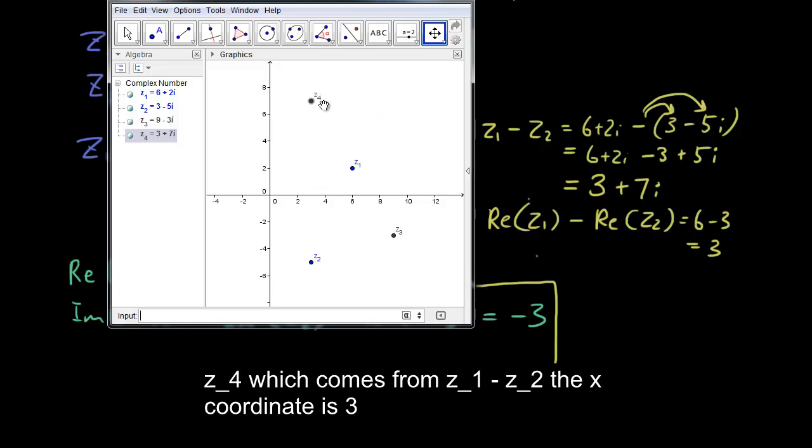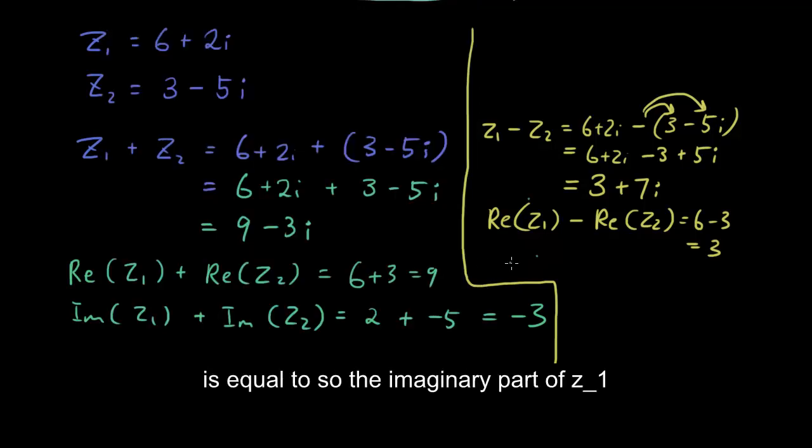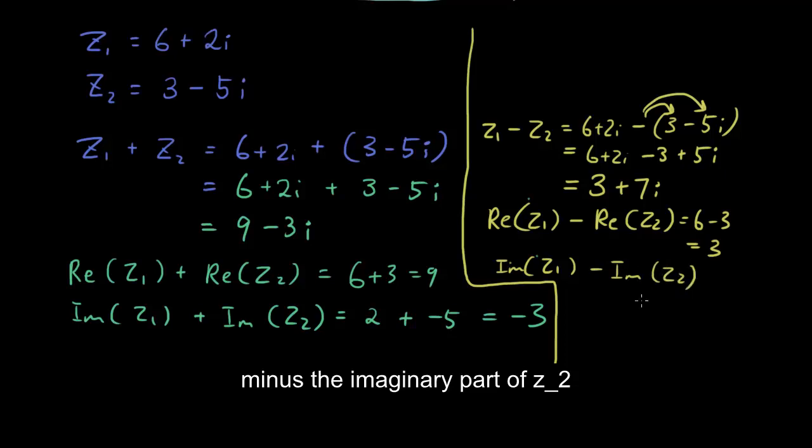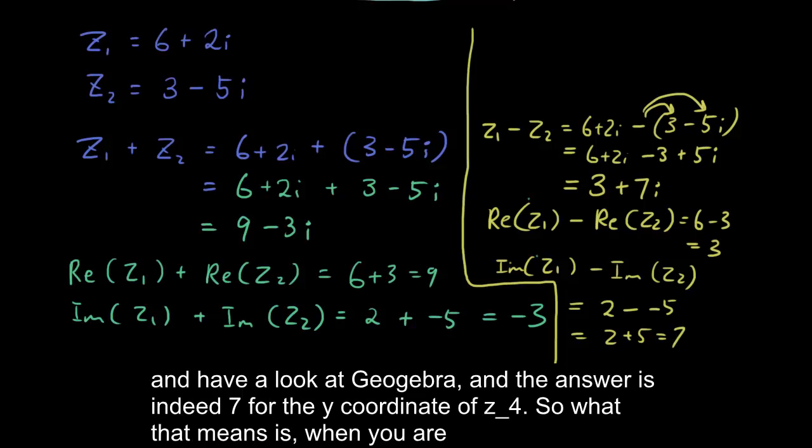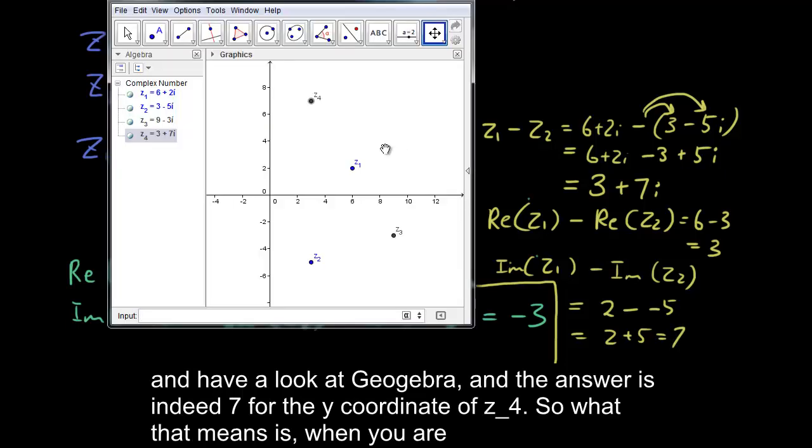The x-coordinate is 3. And the y-coordinate is equal to, so the imaginary part of z1 minus the imaginary part of z2, which is equal to 2 minus z2 has an imaginary part of negative 5. So 2 minus negative 5, which is 2 plus 5, which is 7. And have a look at Geogebra. And the answer is indeed 7 for the y-coordinate of z4.